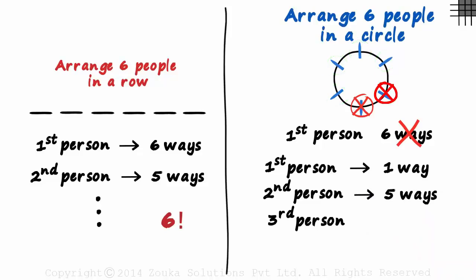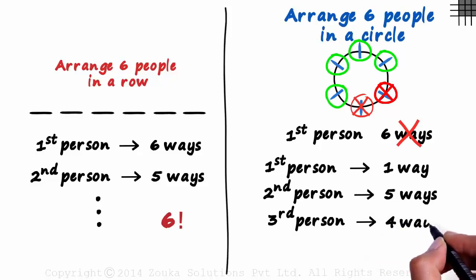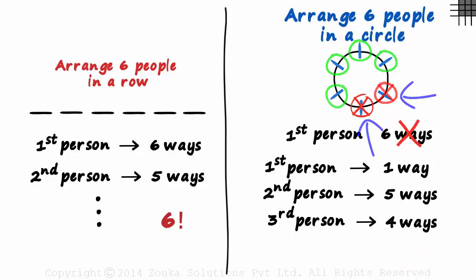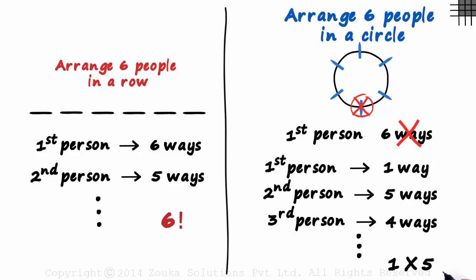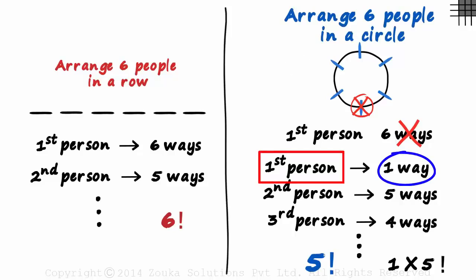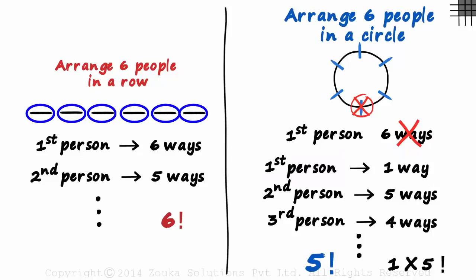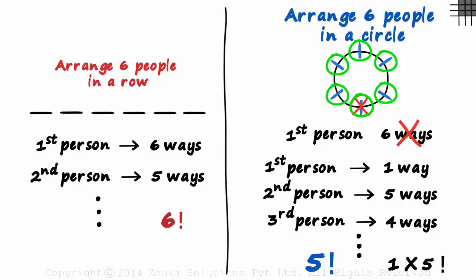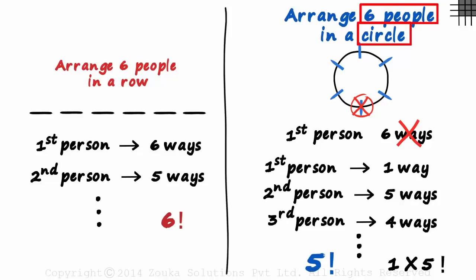Similarly, the third person can be seated in four different ways, assuming the first two are already seated, and this goes on till everybody is seated. The answer will be one multiplied by five factorial, which equals five factorial. This was the logic behind subtracting one from n. The first person can be seated in just one way. In a row, each slot is different for the first person, but in a circle, each position is the same for the first person. So n people can be seated in a circular fashion in n minus one factorial ways.